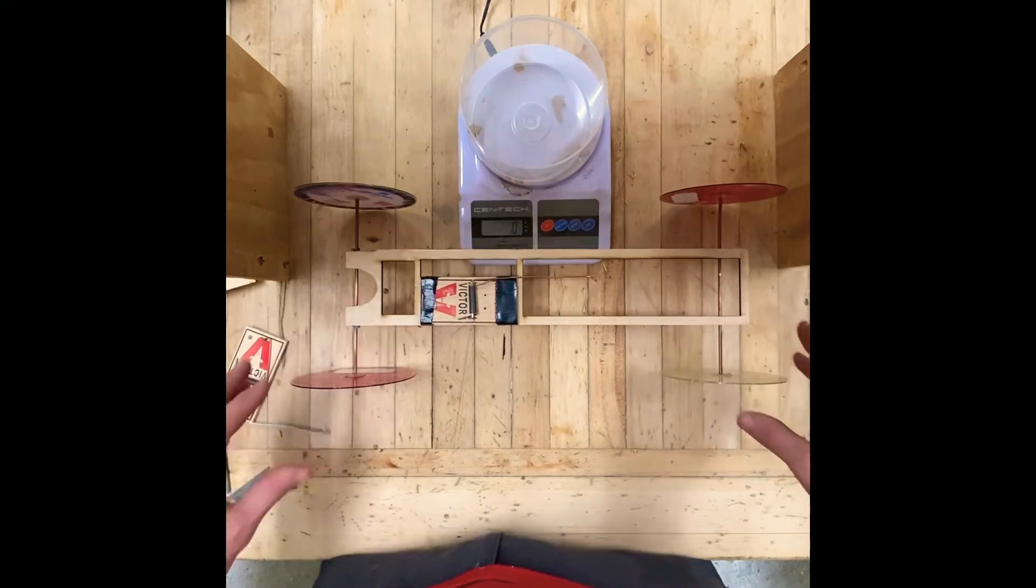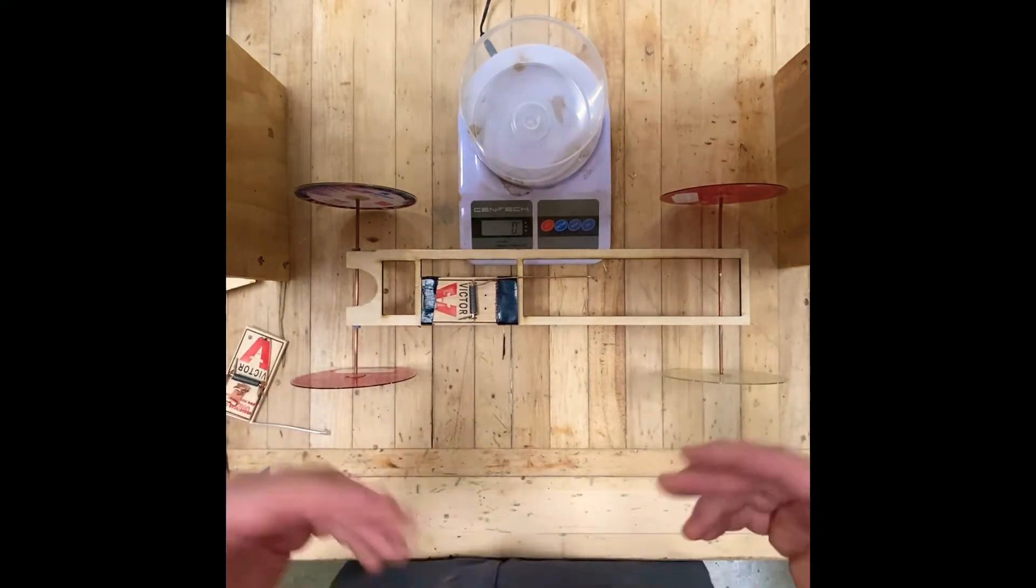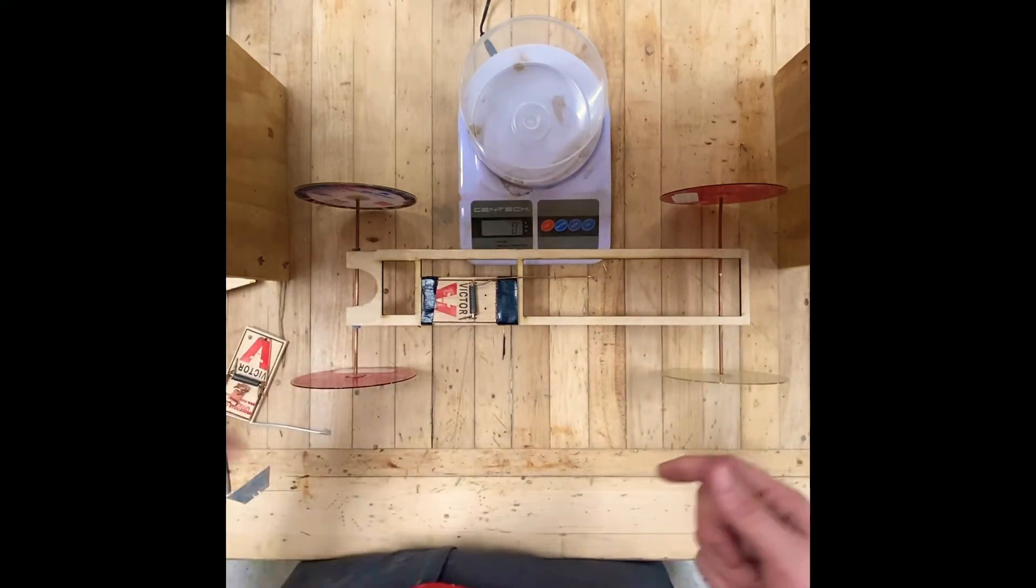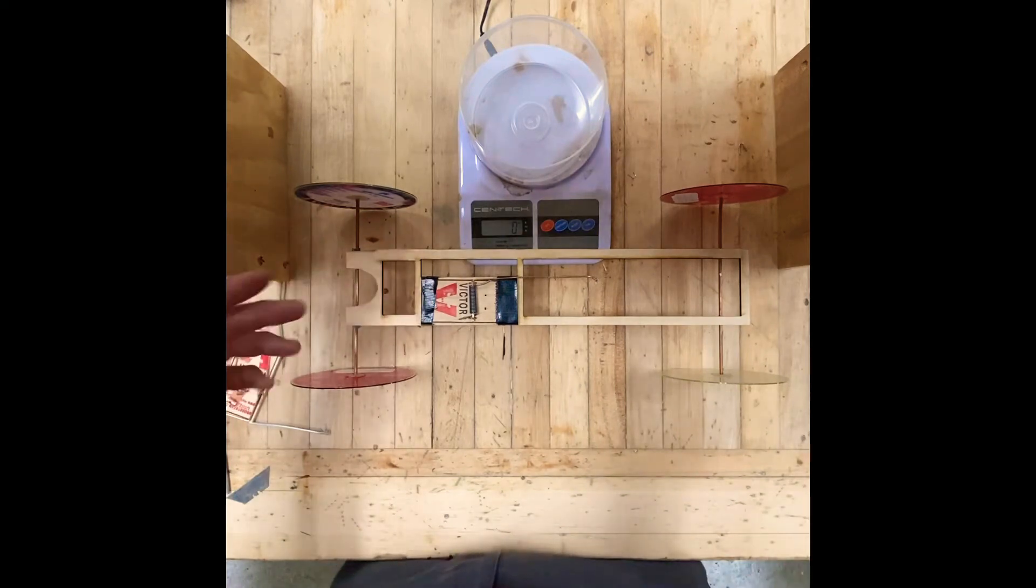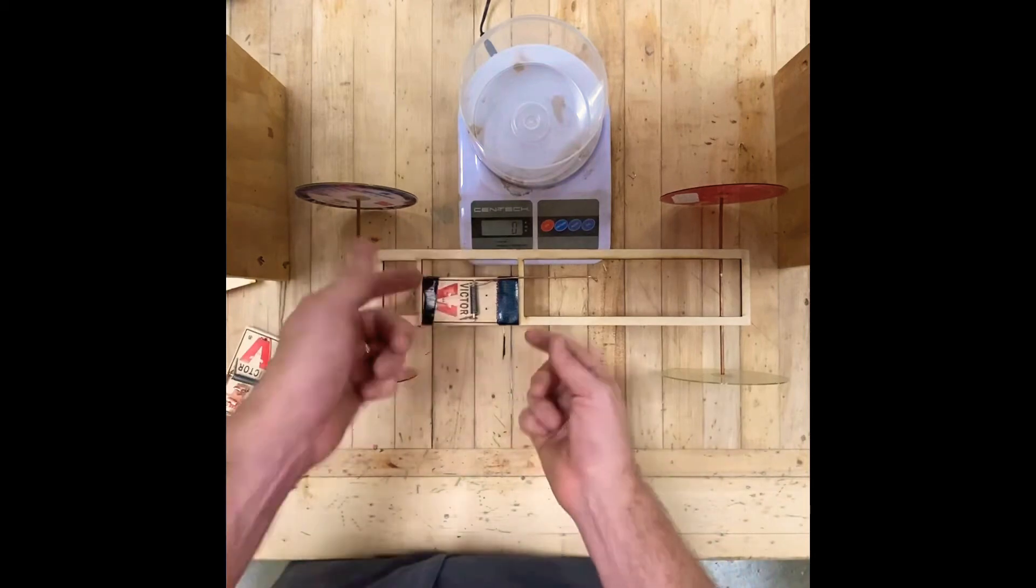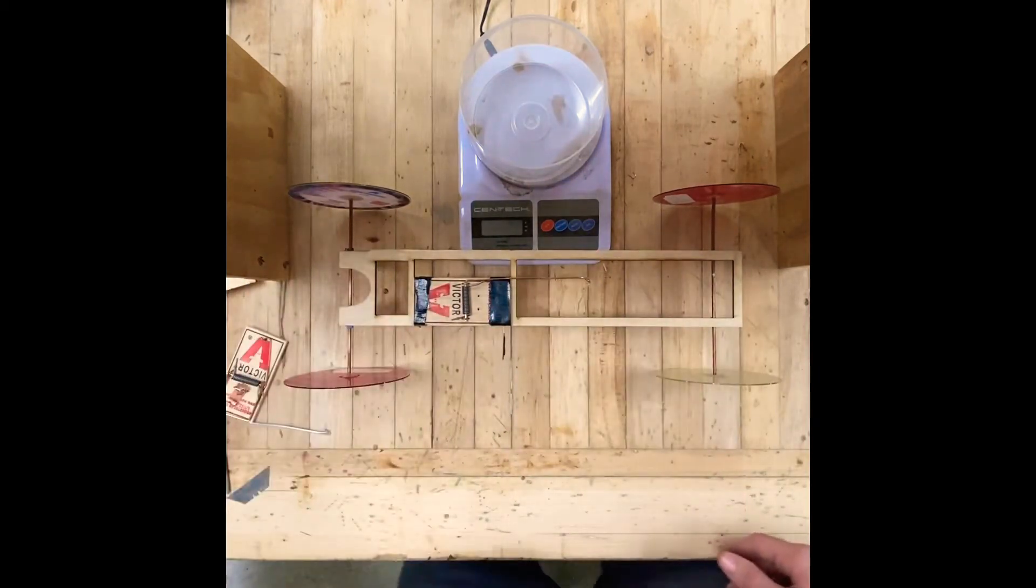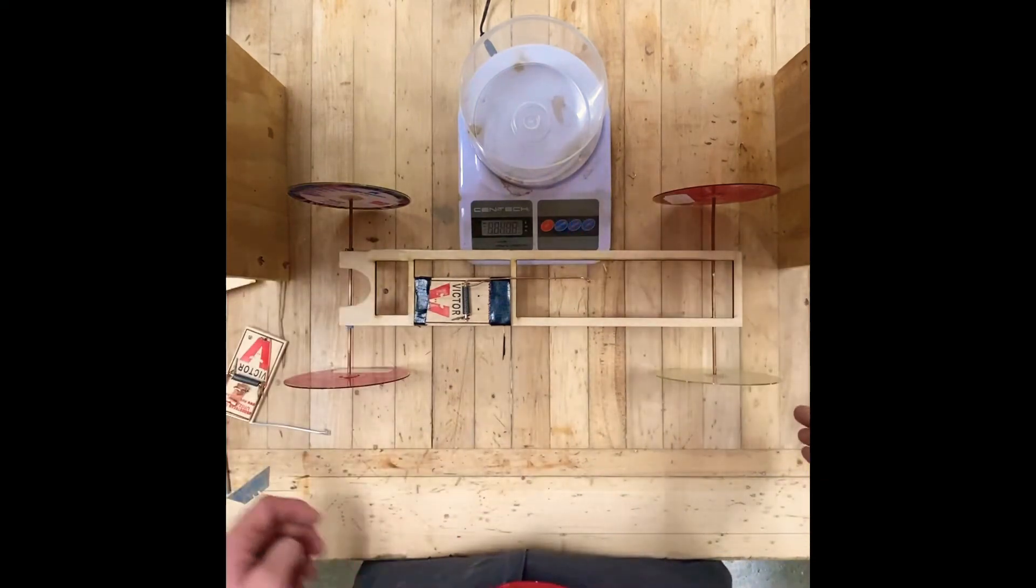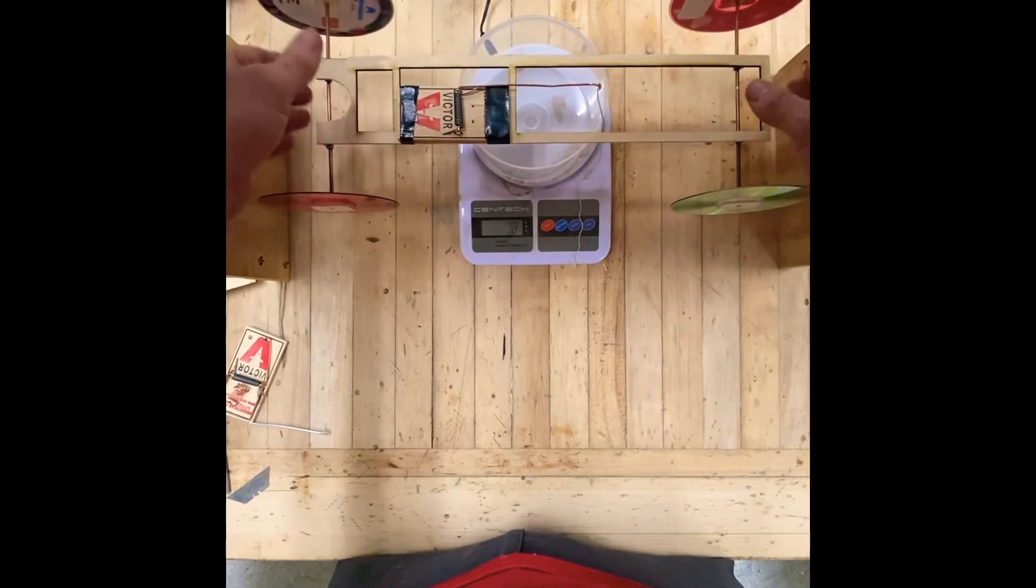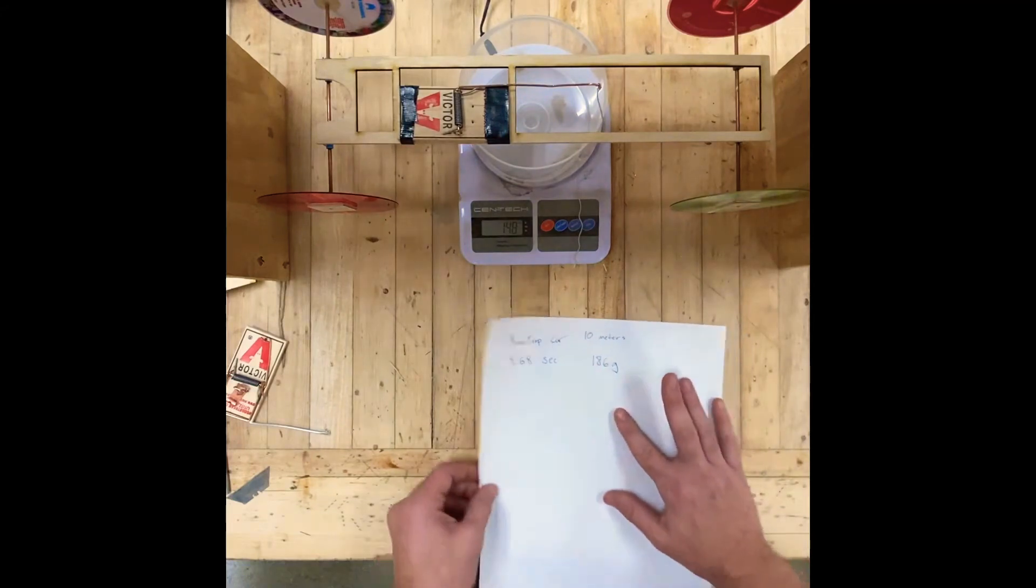Now I know you don't have a laser cutter at home most likely, otherwise you probably wouldn't be building a mousetrap car this simple. But we used it here. This is an easy efficient way to blast out the shapes just for the process of weight reduction. The basic structure is the frame. A little bit back here I left it blocked in underneath for the trap and then left a little bit of support right here. Let's see, here we are at 147 grams.